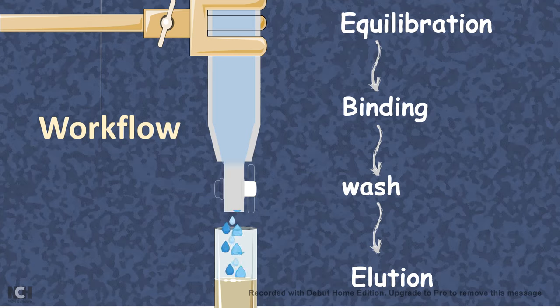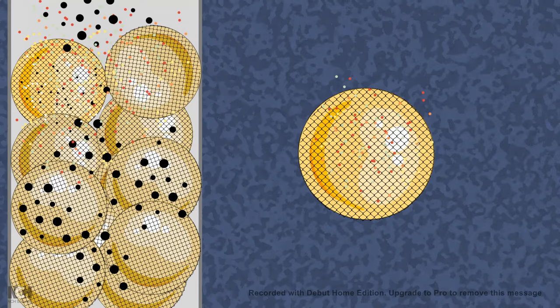Now let's see how gel filtration chromatography is very different from other types of column chromatography. Gel filtration chromatography has the column packed with beads which are porous. These beads are either made up of agarose, which are known as sepharose beads, or dextran, or polyacrylamide.